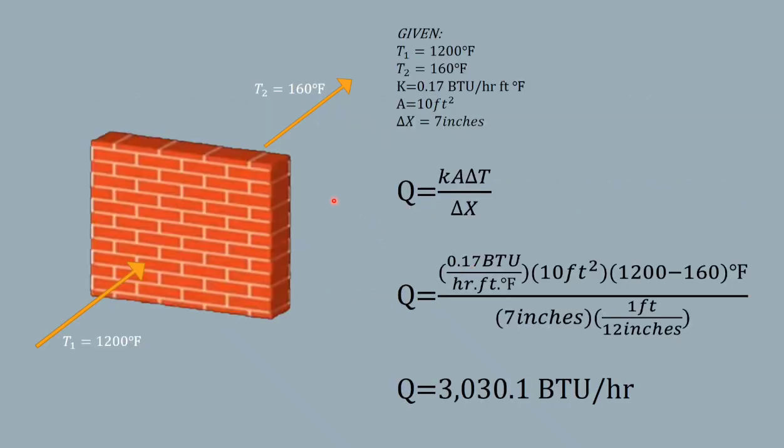So here we have the figure, which is the brick wall. It has 7 inches thickness here. And the temperature one is 1200°F, so this will be the outside temperature. The temperature inside is 160°F.